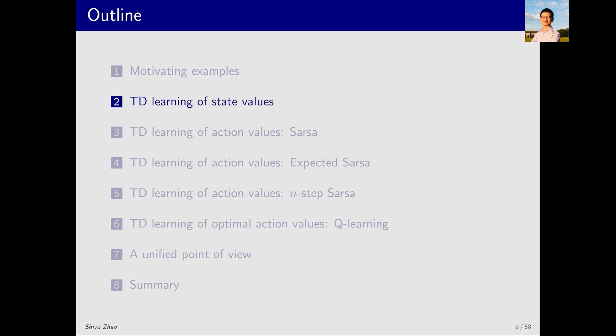Now let's formally introduce the first TD algorithm in this lecture. What does this algorithm do? It estimates the state value of a given policy pi. Let's look at why we need to estimate the state value. Once I estimate the state value, I can do policy evaluation. By combining this with policy improvement, I can find the optimal policy. But let's look at the first step, how to use the TD algorithm to do policy evaluation.